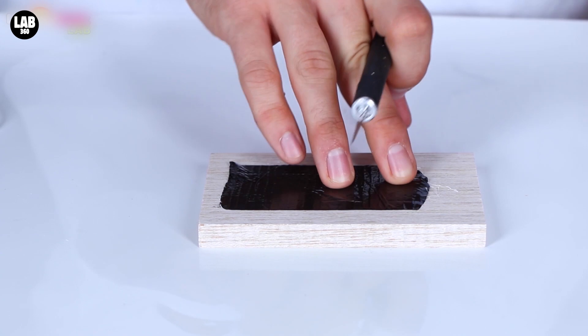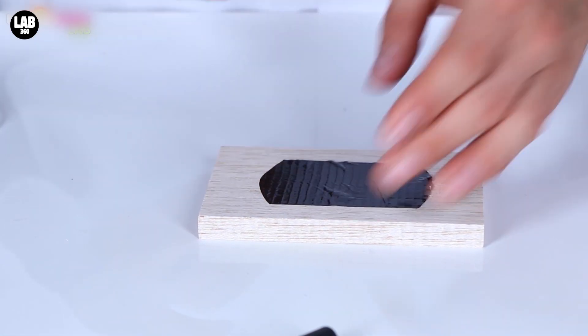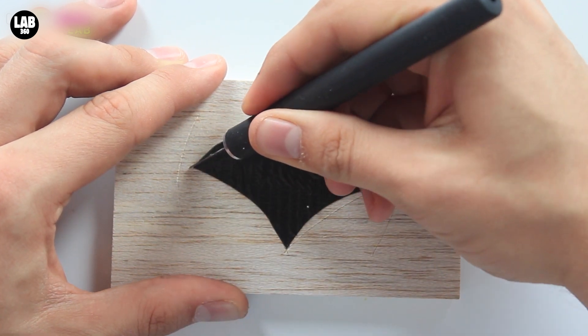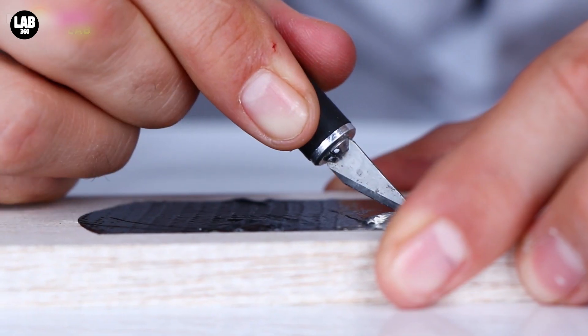Peel off the excess, and then carry on. As you saw, I'm going to make a bat. So I'm just going to draw from imagination, and from memory, using the knife as a pen.